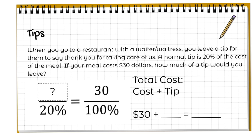Now let's take a look at tips. This is one of your slides as well, so if you're watching the video, you're getting freebies. When you go to a restaurant with a waiter or waitress, you leave a tip to say thank you for taking care of us. Usually when you have a really good waiter, you should leave at least a 20% tip. Sometimes people leave 10 or 15 if the waiter isn't that great, but we're going to say our waiter was amazing and leave a 20% tip.